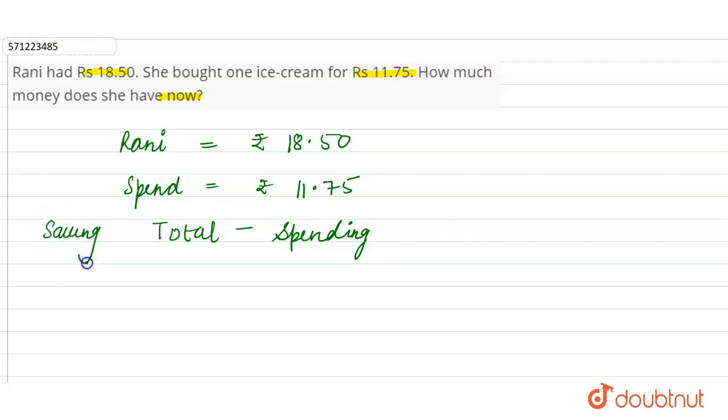So let's subtract 18.50 and 11.75. So 10 minus 5 is 5, 40 minus 7... 7, and 7 minus 1 is 6. So she has rupees 6.75 now.